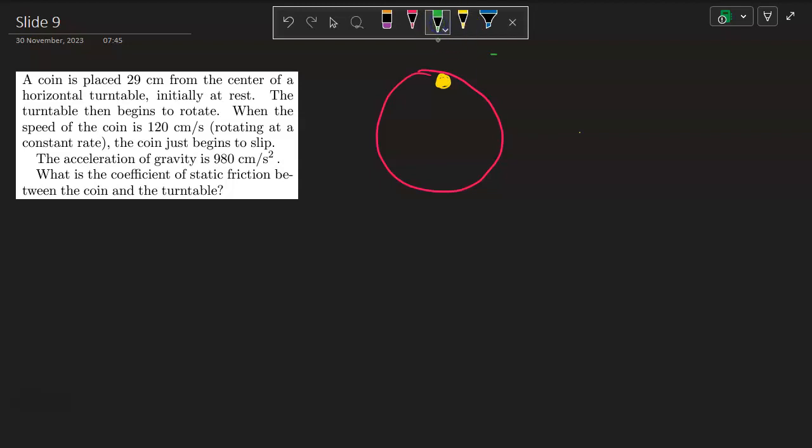I'm drawing it right here. And this coin is a distance R value of 29 centimeters. We will convert. This is 0.29 meters. So whatever they give you in centimeters, divide by 100. It'll go into meters.